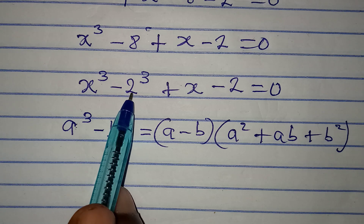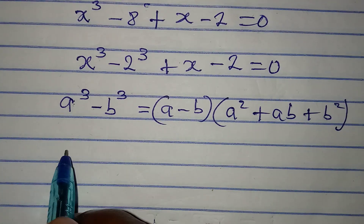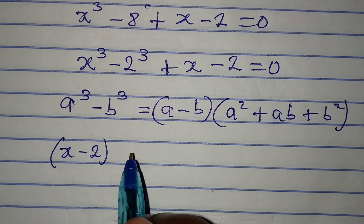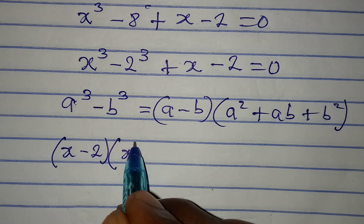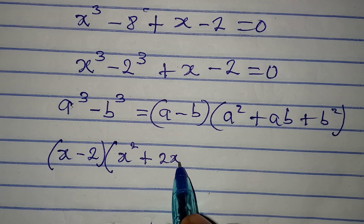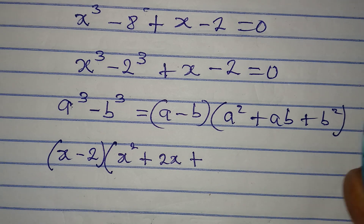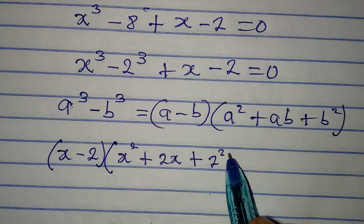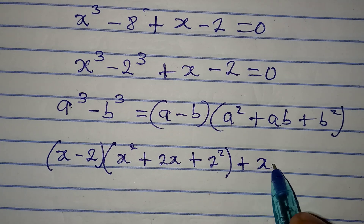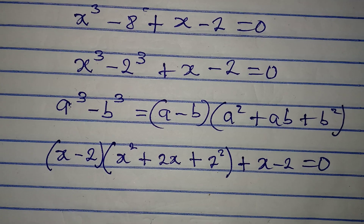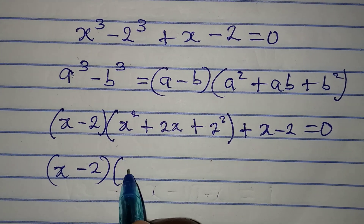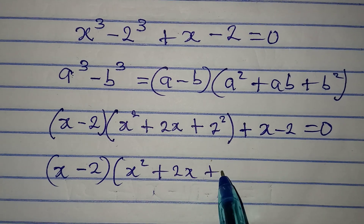Applying the difference of cubes to x³ - 2³, we get (x - 2) in the first bracket, and then in the second bracket we have x² plus ab which is 2x, then plus b² which is 2² = 4. So we have (x - 2)(x² + 2x + 4), and then close that bracket plus x - 2 equals 0.